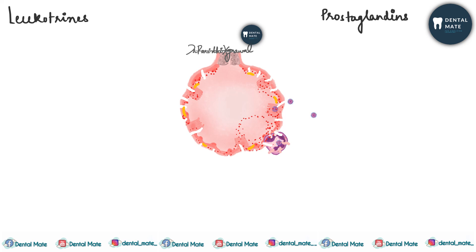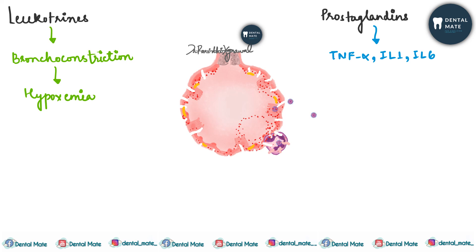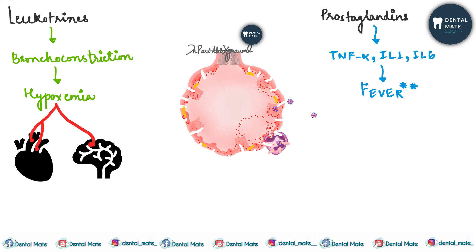White blood cells and damaged endothelial cells release inflammatory mediators such as leukotrienes and prostaglandins, which are arachidonic acid metabolites. Leukotrienes cause bronchoconstriction, impairing ventilation and leading to hypoxemia. Prostaglandins, along with TNF-alpha, interleukin-1, and interleukin-6, cause fever — a prominent symptom of COVID-19. The hypoxemia stimulates chemoreceptors in the aortic arch, carotid, and brain, which stimulate the cardiopulmonary centers to increase breathing rate and heart rate. Therefore, patients with hypoxemia typically show tachypnea and tachycardia.